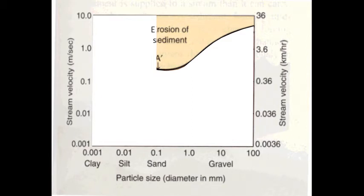Let's look at the relationship between stream velocity and stream erosion - specifically the velocity required for particles to be detached from the surface. Along the x-axis are particle sizes ranging from the very smallest clay up to large gravels, and the y-axis shows stream velocity on logarithmic scales. Starting at sand, you need progressively faster streams to detach larger particles from the stream's surface - the larger a particle gets, the heavier it is, the faster the stream needs to be to detach it.